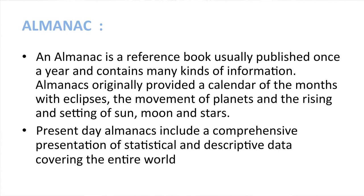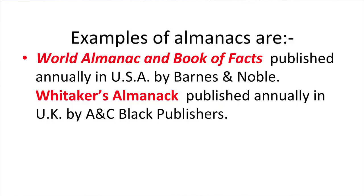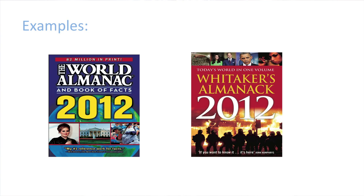An almanac is a reference book usually published once a year containing many kinds of information. Almanacs originally provided a calendar of months with eclipses, the movement of planets, and the rising and setting of the sun, moon, and stars. Present-day almanacs include a comprehensive presentation of statistical and descriptive data covering the entire world. Examples of almanacs are World Almanac and Book of Facts, published annually in the USA by Barnes & Noble, and Whitaker's Almanac, published annually in the UK by A&C Black Publishers.